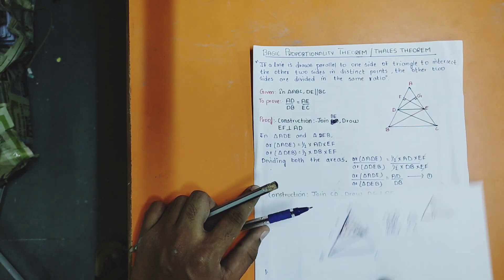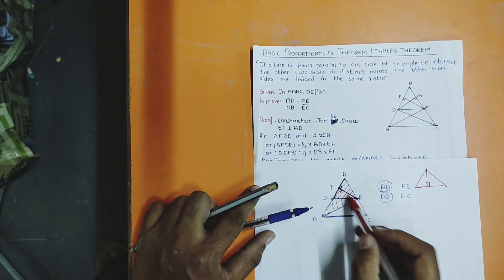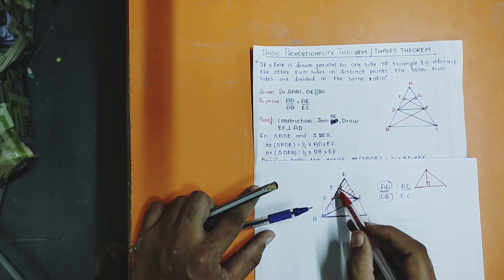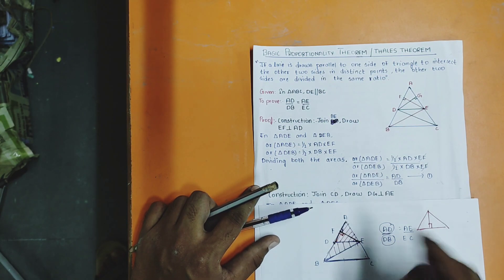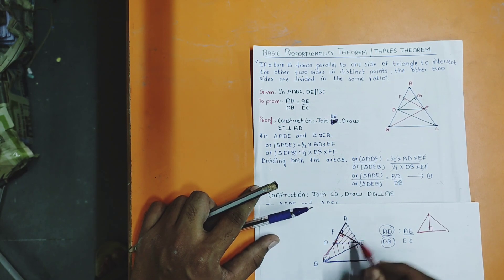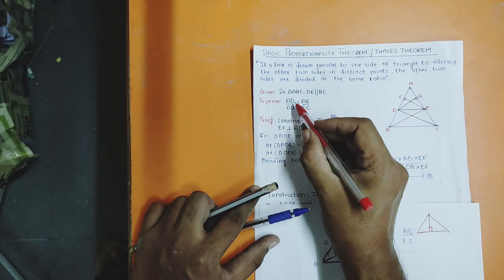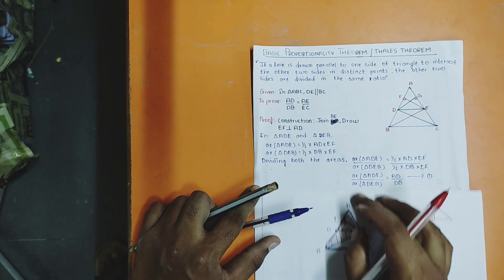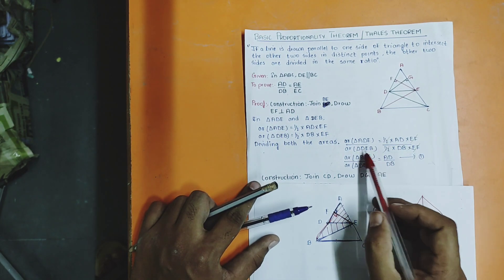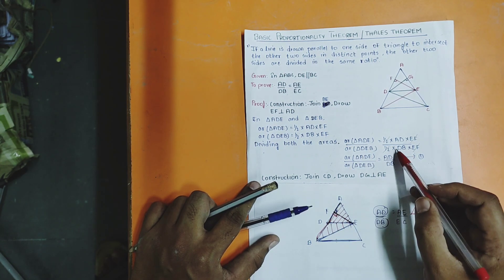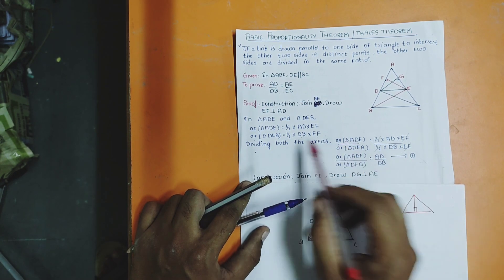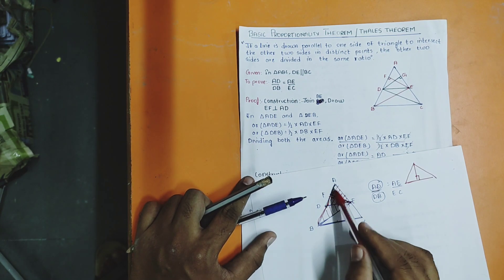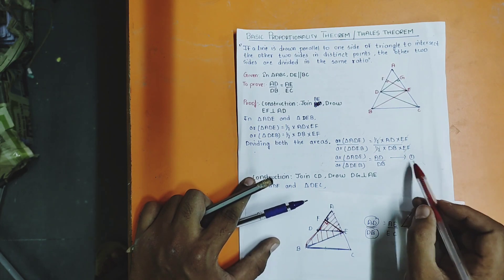EF is the height for both triangles. Now, I want AD by DB. I will divide the two area ratios. Half and half cancel, and EF and EF cancel. What remains is AD by DB — this is equation number one: area(ADE) / area(DBE) = AD / DB.